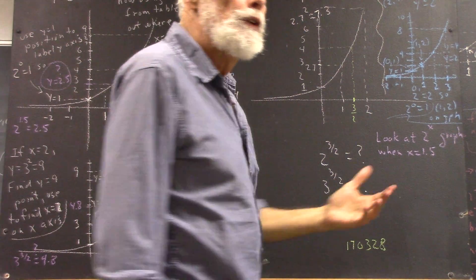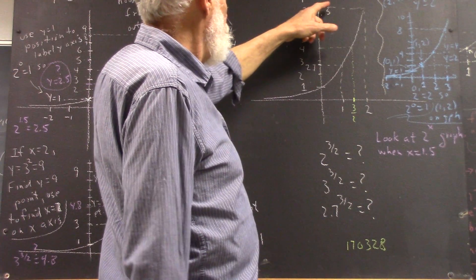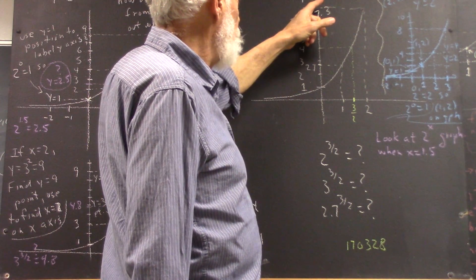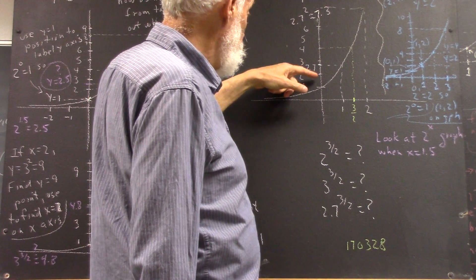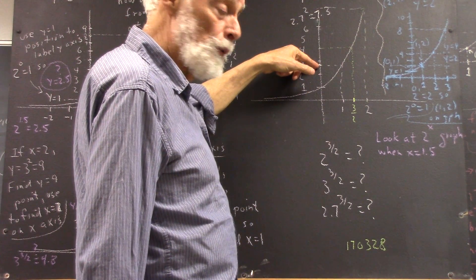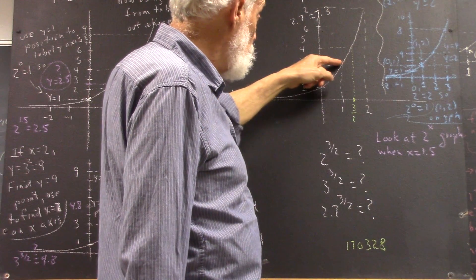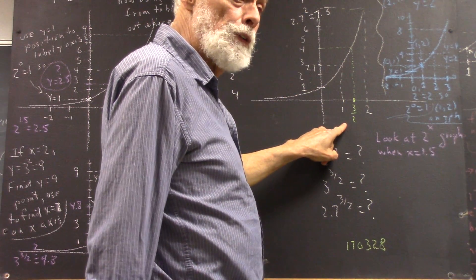Then to find out where x equals 1, we know that if x is 1, then y has to be 2.7 to the 1, which is 2.7. So we find 2.7, it's between 2 and 3, so we're closer to 3. We project over and down to find where x equals 1.